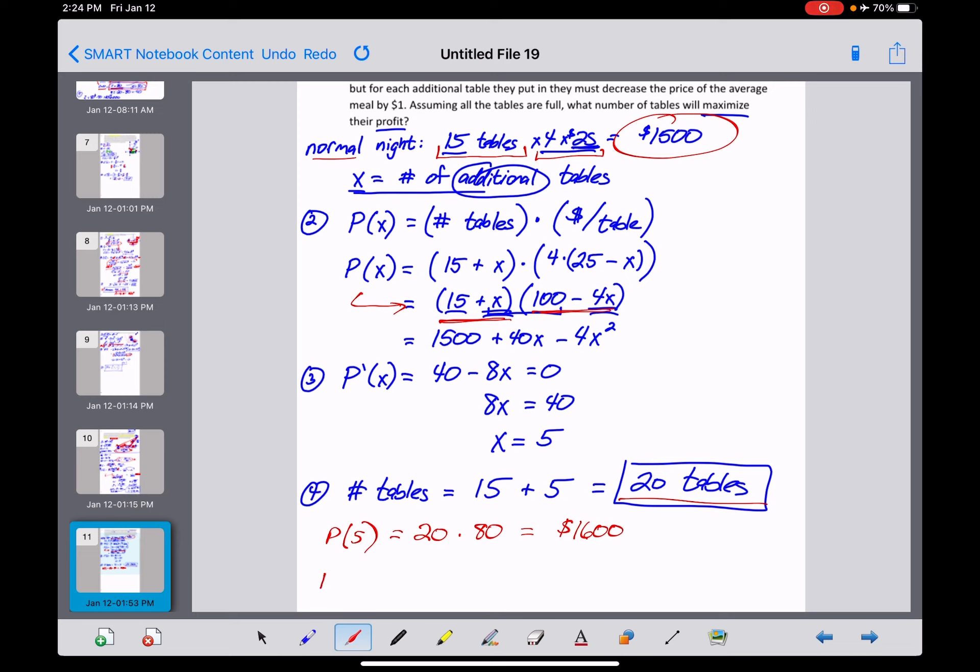But if I really wanted to check this, I'd probably see, wait a minute. Is it possible to go too far? What if I put out 6 additional tables? Now, when I put 6 into this function, I now should get an amount that's smaller than $1,600. Let's find out.